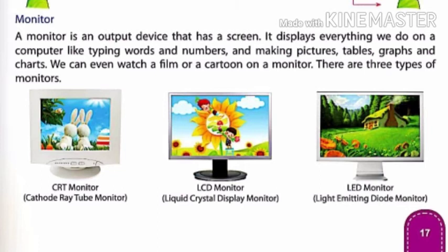Everything we do on a computer — like typing words and numbers and making pictures, tables, graphs and charts — we can even watch a film or cartoon on a monitor. There are three types of monitors. Monitor is a display screen. It looks like a TV. It is a displaying device.